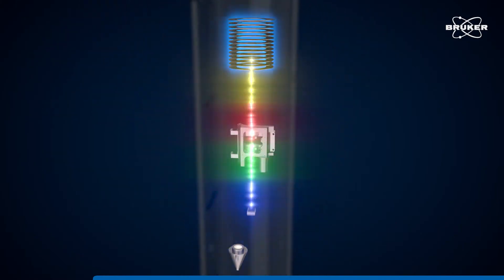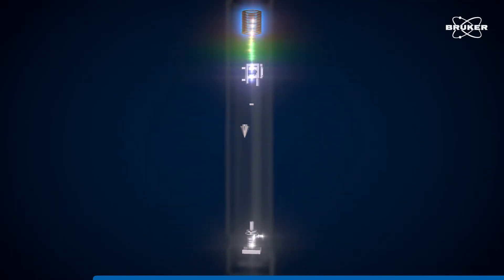In the reflector mode, the particles are diverted so that they fly towards a second detector.